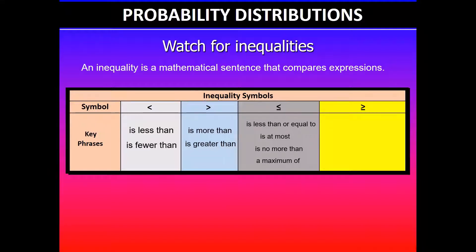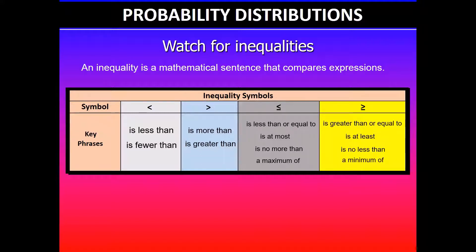The fourth one, 'greater than or equal to', the keywords are 'at least' — at least means greater than or equal to — or 'no less than' — no less than will imply greater than or equal to — or 'a minimum of' will also imply greater than or equal to. For this achievement standard, you will need to be familiar with these keywords linked to these inequalities. I'd suggest you pause the video and take notes as you go.